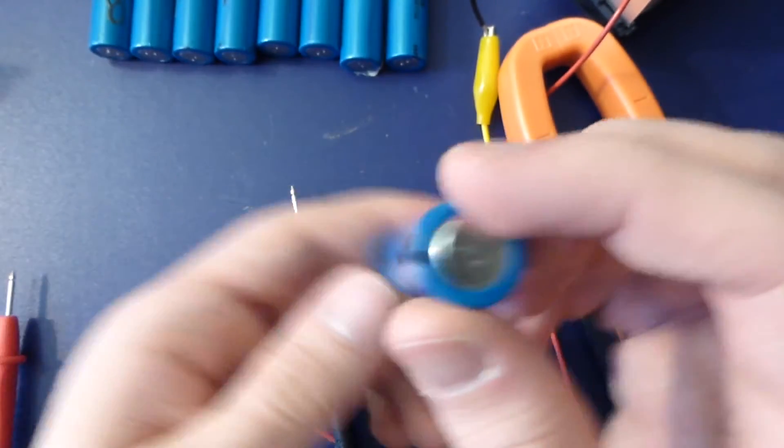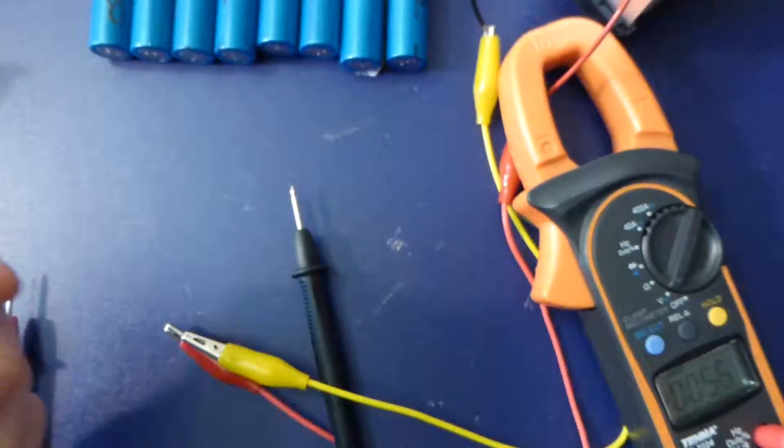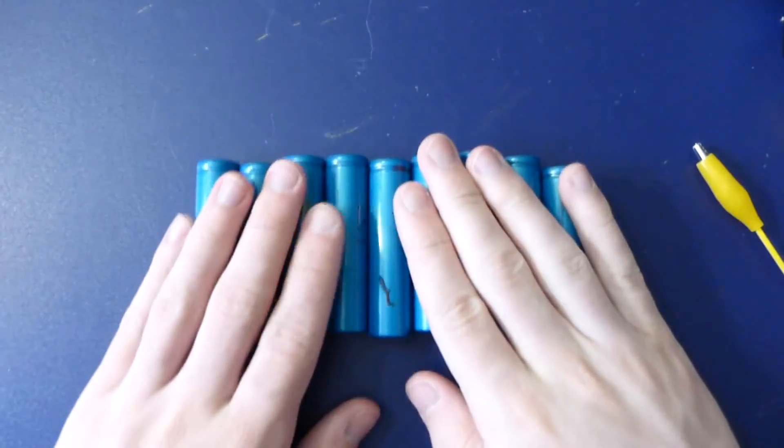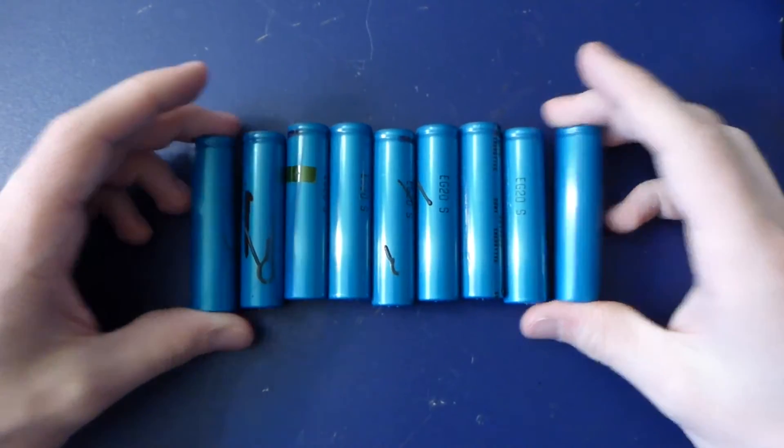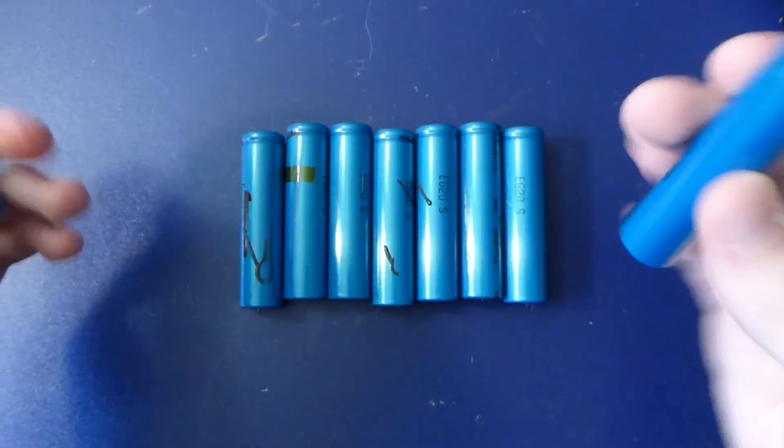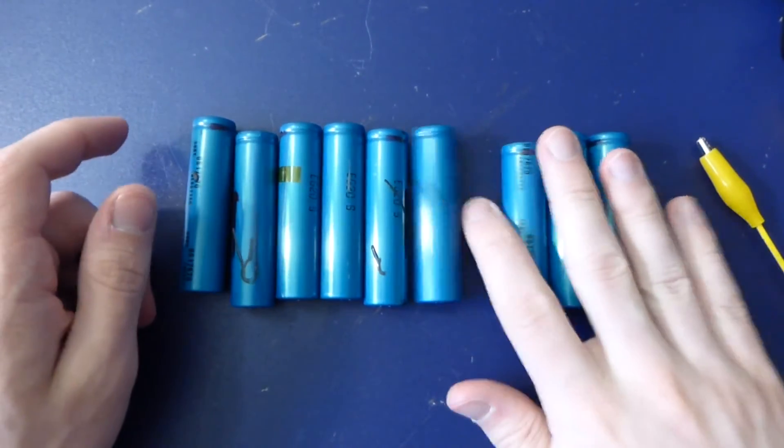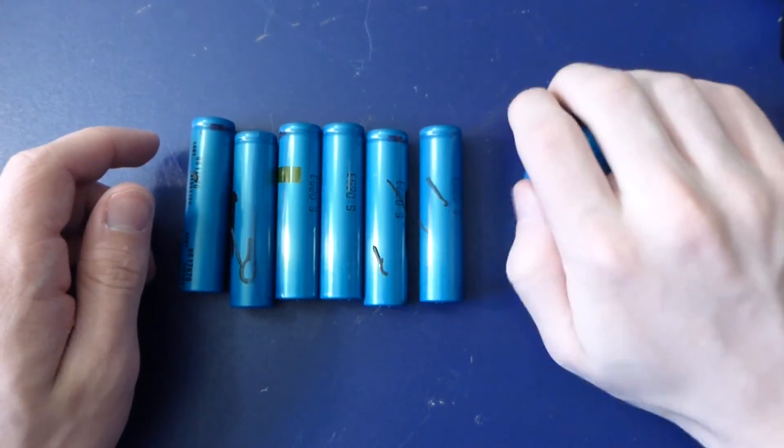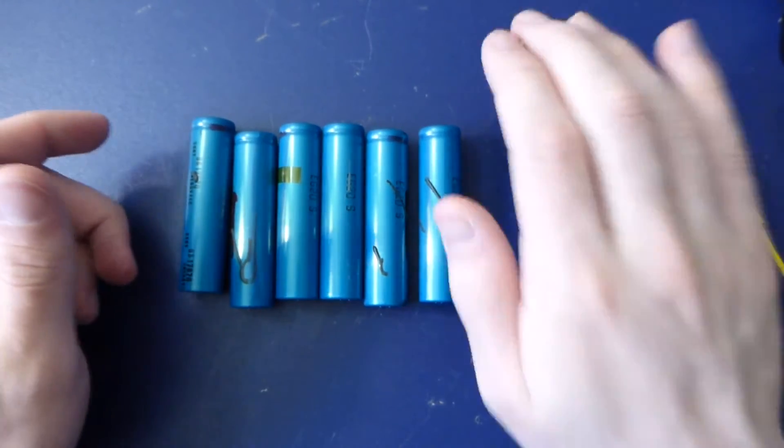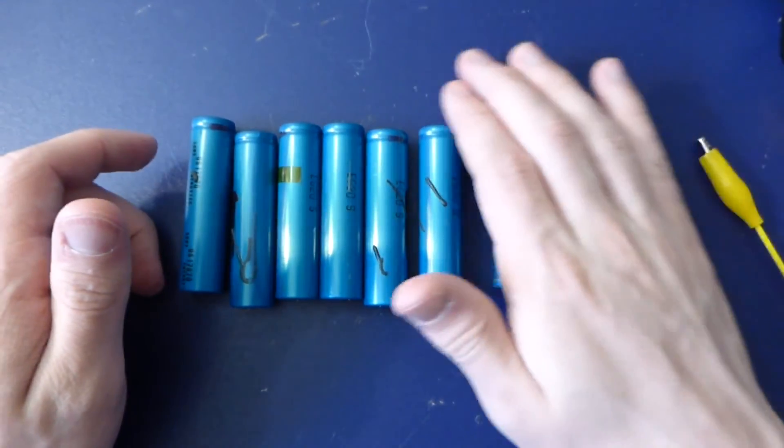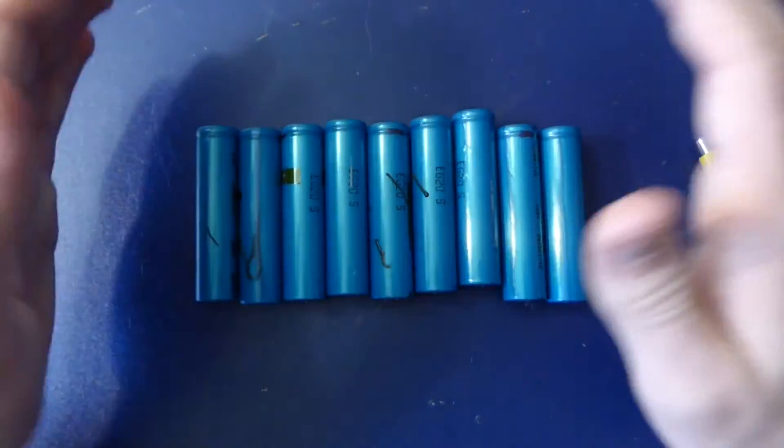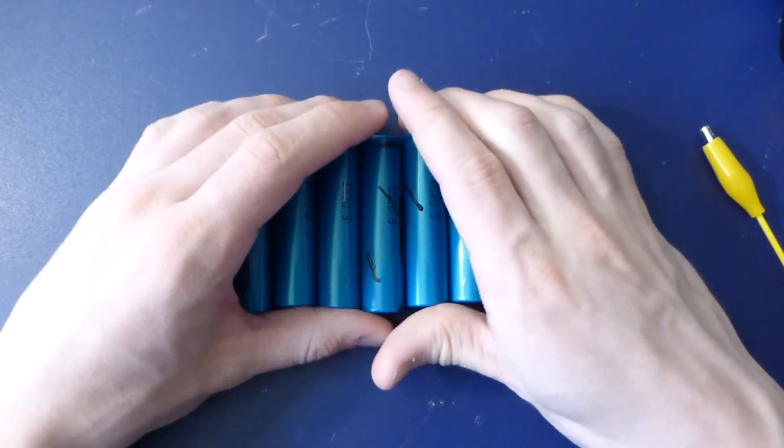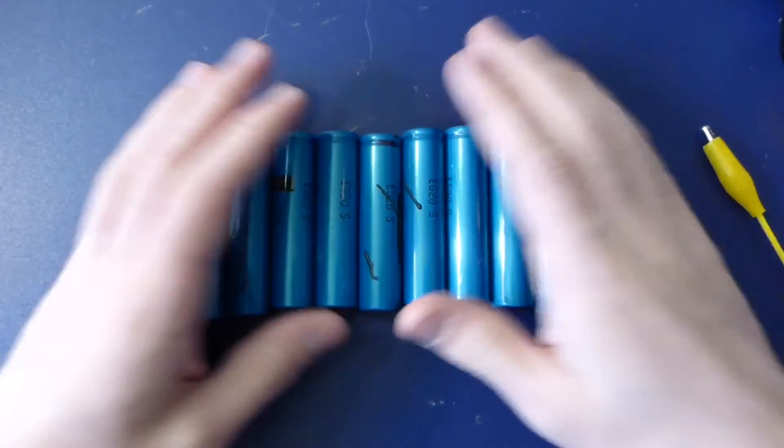I've just finished doing some preliminary testing on these and all the cells appear to be perfectly healthy. These three are actually a little bit better than the rest, or at least they're more charged. Maybe they were one of the three in a pack. They're all very similar and it looks like they've got at least some life left.